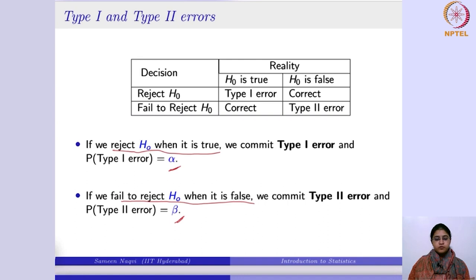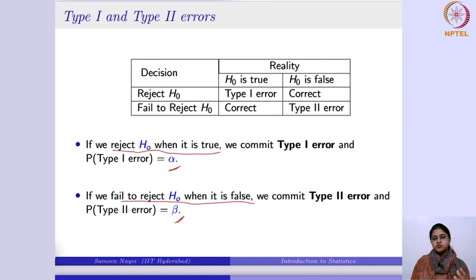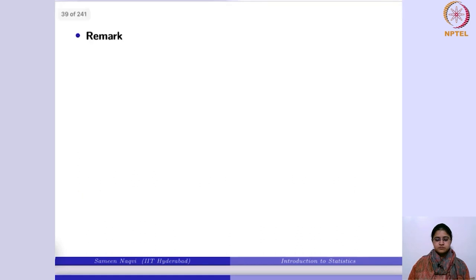From a manufacturing perspective, Type 1 and Type 2 errors correspond to producer's risk and consumer's risk. If the manufacturing lot is of good quality but the consumer rejects it, that is a Type 1 error — the producer's loss, since time and money were invested. If the lot is of poor quality but the consumer accepts it, that is a Type 2 error — the consumer's risk.